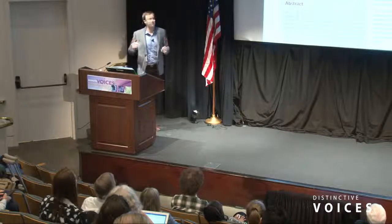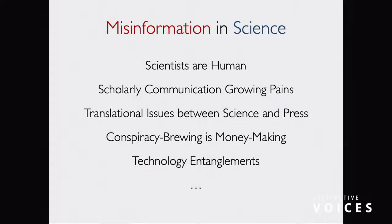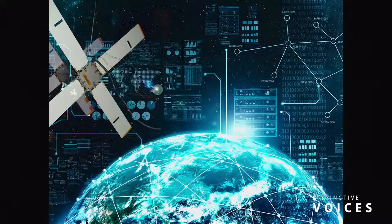The point is that this medium — if it's hard for us, imagine how hard it is for journalists, imagine how hard it is for someone from the public that doesn't have that training. Scientists are human. Scholar communication is going through growing pains with open access — and I'm a huge advocate of open access — but with the onslaught of predatory journals, it is making it harder for journalists to do their job. There are translational issues between science and press. Conspiracy brewing is money making, specifically in science and health. We have to contend against that. And we're always going to have technology entanglements.